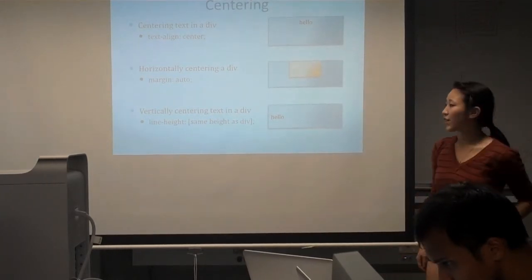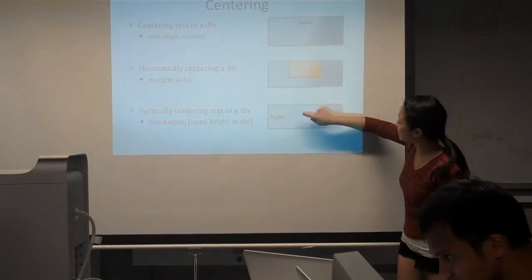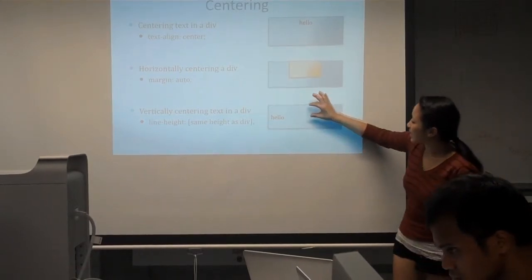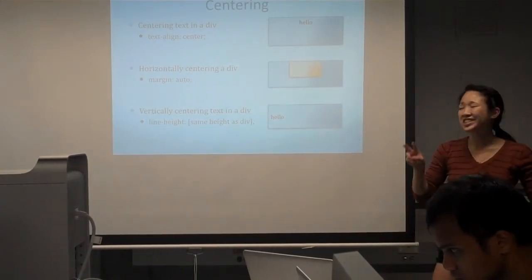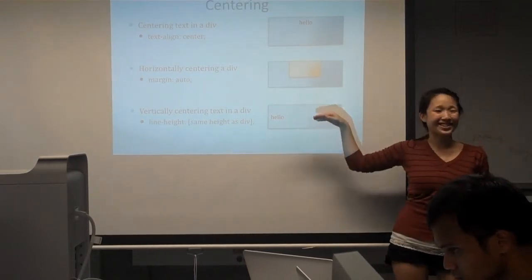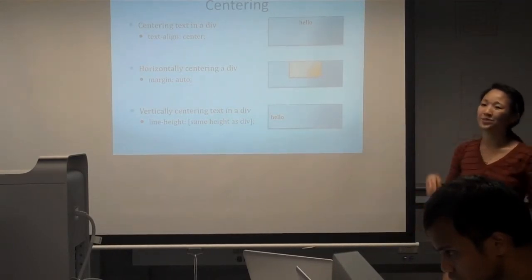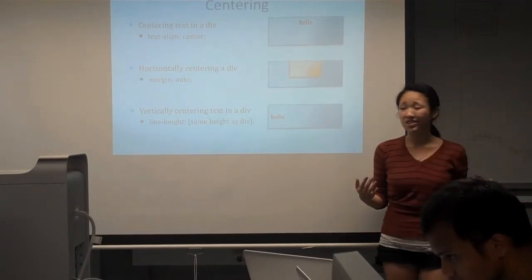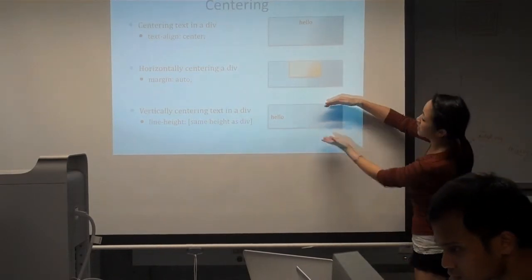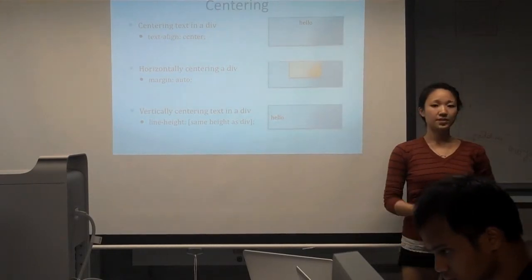The last thing is vertically centering text in a div. For example, if you have nice buttons and you want to have the text centered vertically, one technique — though it's kind of cheating — would be to set the padding on top perfectly so it looks centered. But if you want to increase the size later you'd have to redo everything, and hard-coding is not good. So what you can do is set your line-height to be the same height as your div, and then the text will be in the middle.